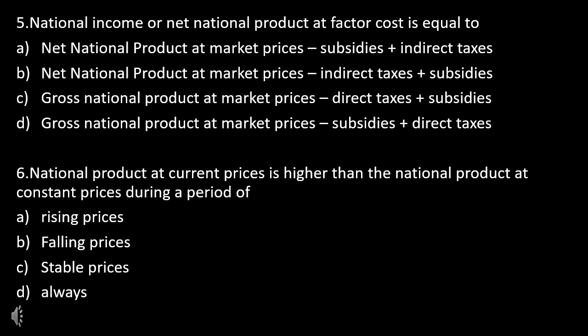Question 6: National product at current prices is higher than the NNP at constant prices during a period of — Rising prices, Falling prices, Stable prices, or Always?